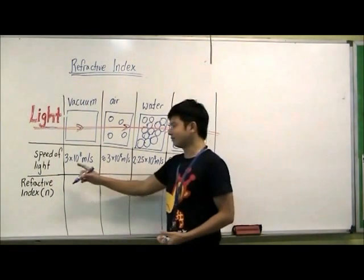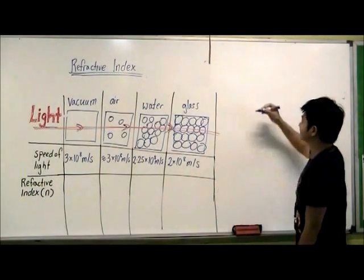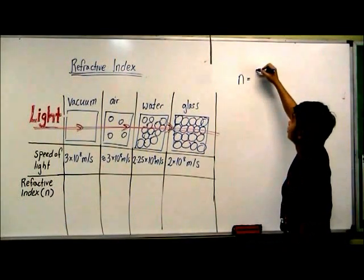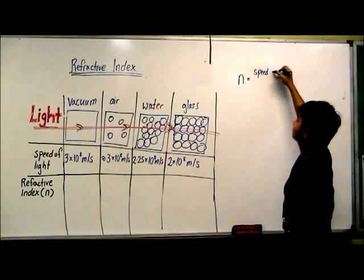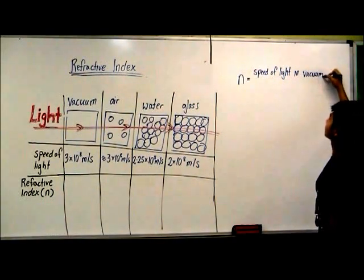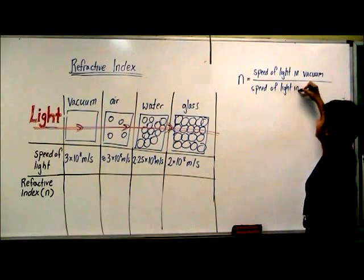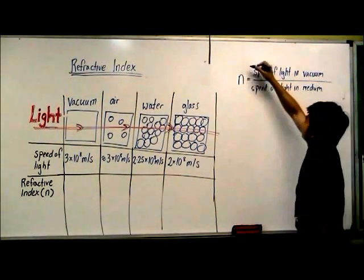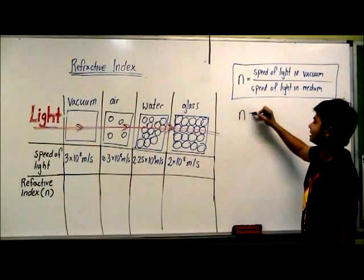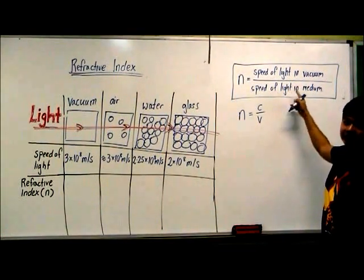With this we can talk about refractive index. Basically, every medium has its own unique refractive index. Refractive index, represented by the small letter n, is equal to the ratio of the speed of light in vacuum to the speed of light in the medium that we are talking about. In simple form, we can write: refractive index n equals C over V, where C means the speed of light in vacuum and V means the speed of light in the medium.